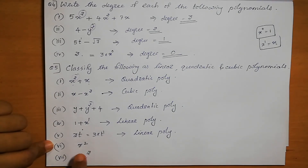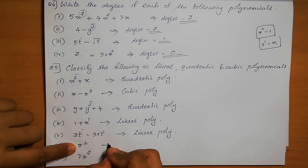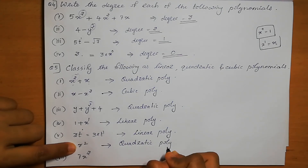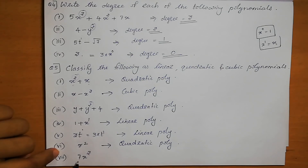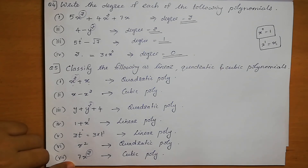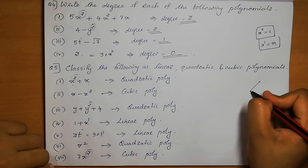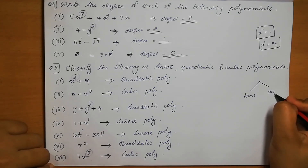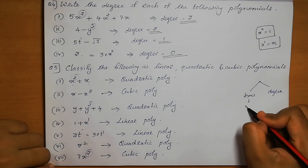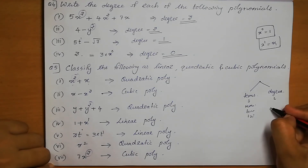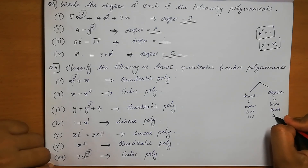Question 6: r squared. The variable r has power 2, so it is a quadratic polynomial. Question 7: 7x cubed. The power is 3, so it is a cubic polynomial. So polynomials can be divided into two categories: based on their terms — monomial, binomial, trinomial — and based on their degree — linear, quadratic, and cubic polynomial.